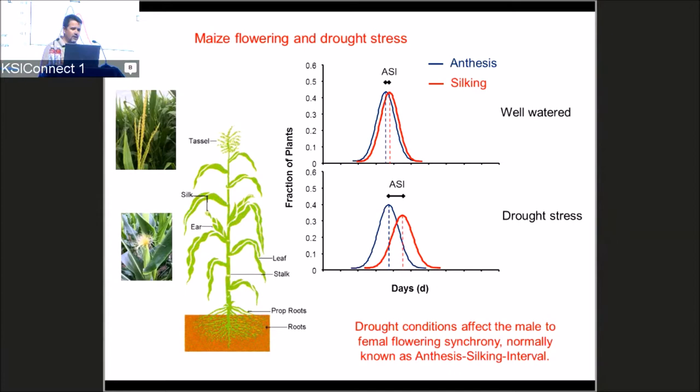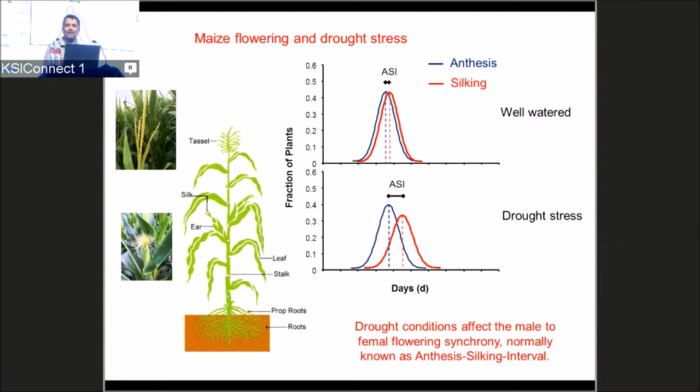Under drought, there is a shift in female flowering relative to male flowering. Under well-watered conditions, male and female flowering are mostly matched. Under severe drought stress, the time to silking is delayed, creating a time gap between male and female flowering. This is what we traditionally call the ASI — the anthesis-to-silking interval — which has been known since the early 1980s.